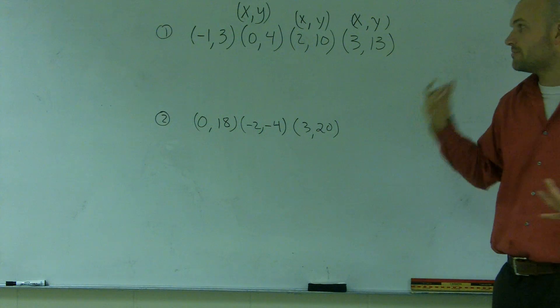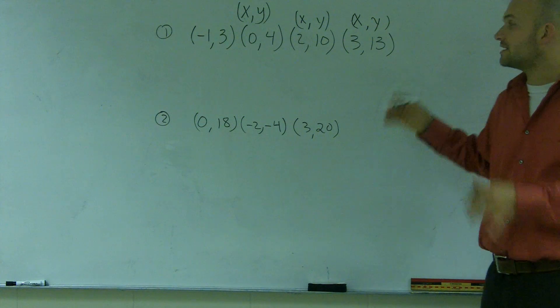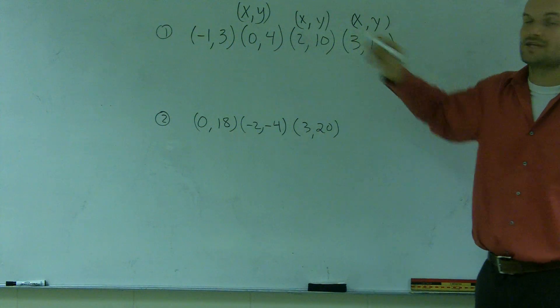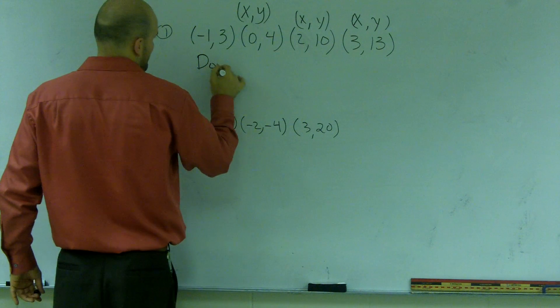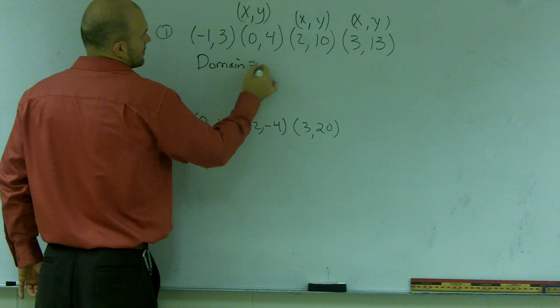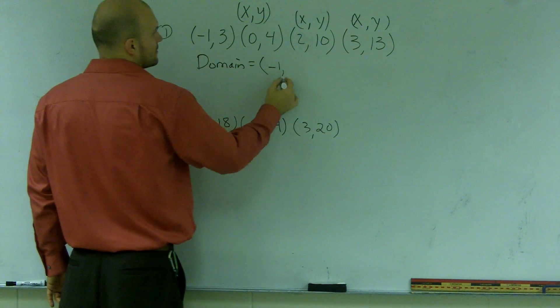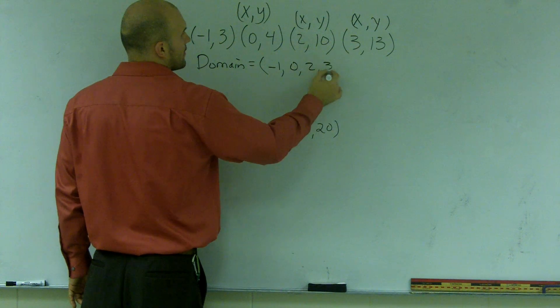Each one of these points I can rewrite as an x comma y. So, what I'm going to do to find the domain, since the domain is all of my x values, I'm just going to pick each x value. So, my domain over here is going to equal negative 1, 0, 2, and 3.